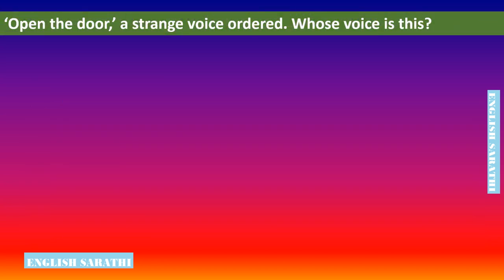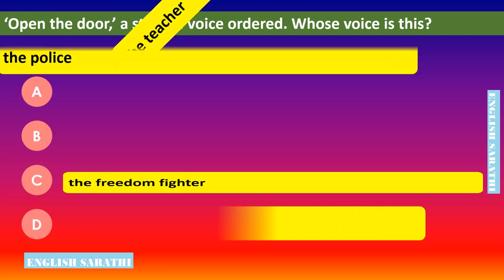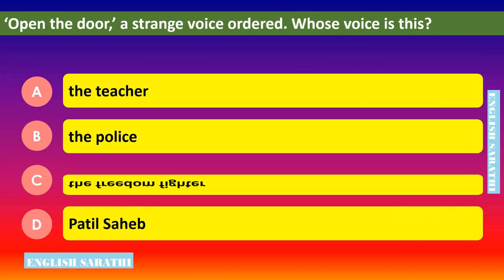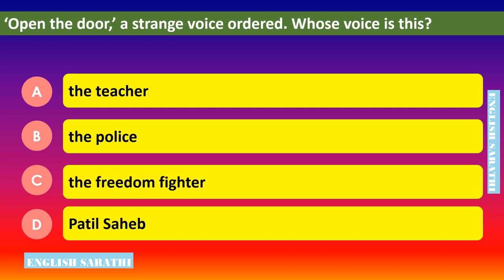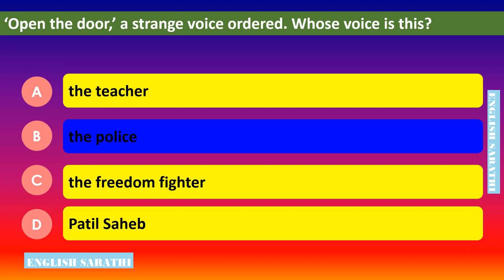Open the door — a strange voice ordered. Whose voice is this? Options are: option A - the teacher, option B - the police, option C - the freedom fighter, option D - Patil Sahib. The correct option is option B - the police.